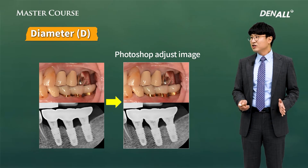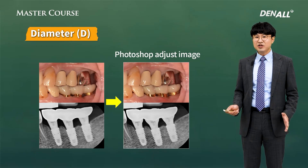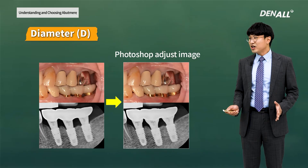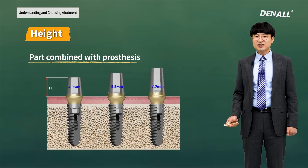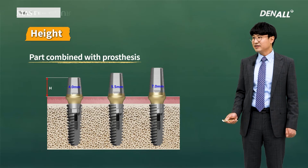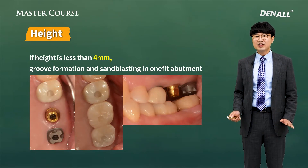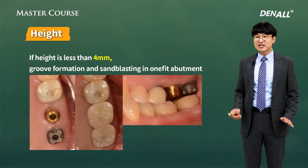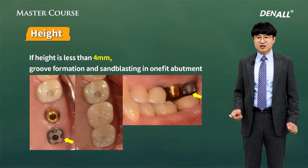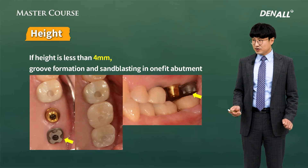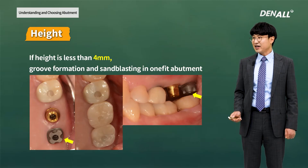On the left is a stock abutment; on the right is a custom abutment — a customized abutment form reproduced with Photoshop. Using a custom abutment is favorable in far more cases. When you choose an abutment, another consideration should be given to height. If the abutment height is over 4 mm, no additional action is needed to prevent prosthesis loss. However, if it is less than 4 mm, a customized abutment is fabricated. To prevent loss, groove formation and sandblasting will help.